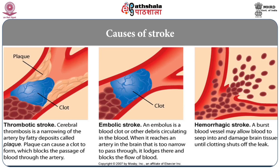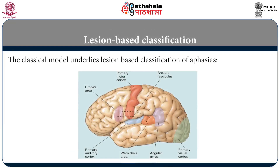Noticing that these are the major causes of stroke aphasias, the initial understanding about aphasia classification is lesion based. The classical model held that most important language areas are located in the left hemisphere. In that hemisphere, you have the primary auditory cortex and Wernicke's area in the temporal lobe, and Broca's area in the third frontal gyrus. Wernicke's area is connected to Broca's area through a band of fibers called the arcuate fasciculus.